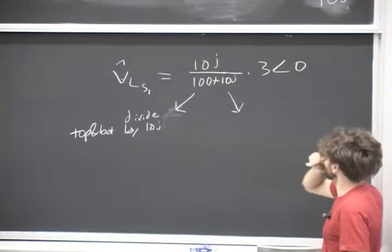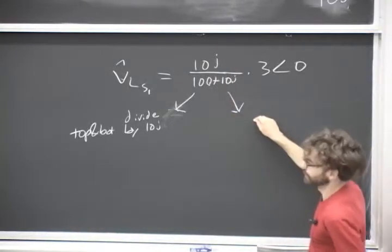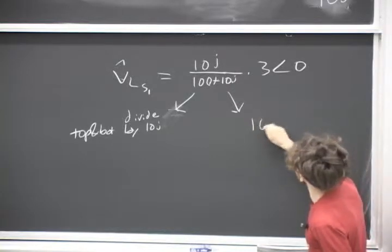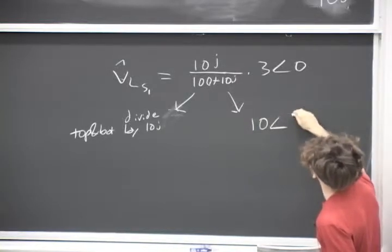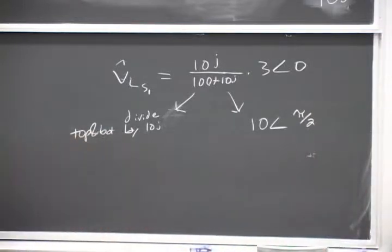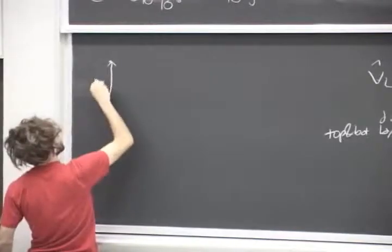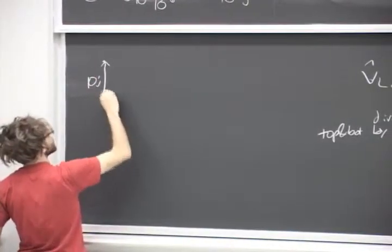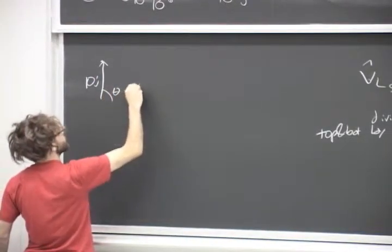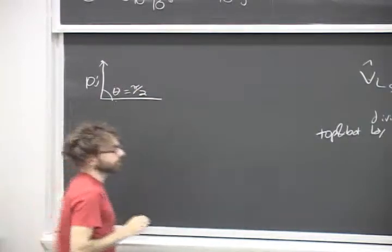So 10j, if you just wanted to, just to see a different way, what would 10j be in polar coordinates? 10 angle pi. Yeah, 10 angle pi over 2. Why is that? Well, if you want, you know, if you don't want to think in terms of formulas, in the complex plane it just looks like 10j. So this angle is pi over 2, and the length is of course just 10, right? Okay.